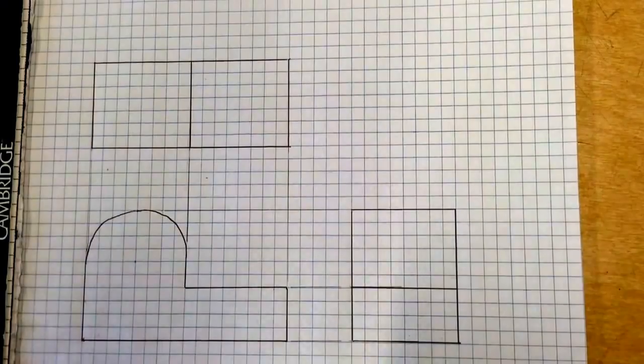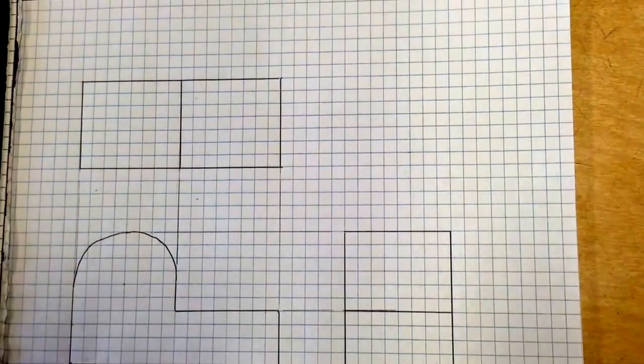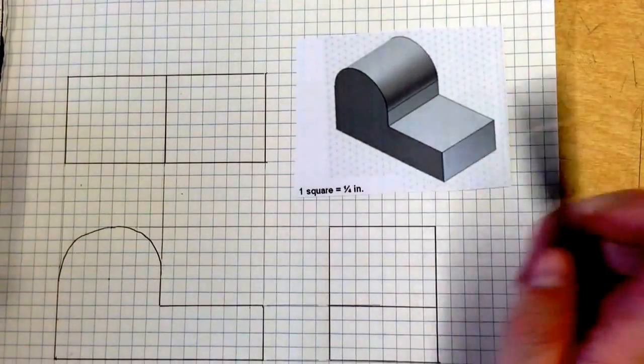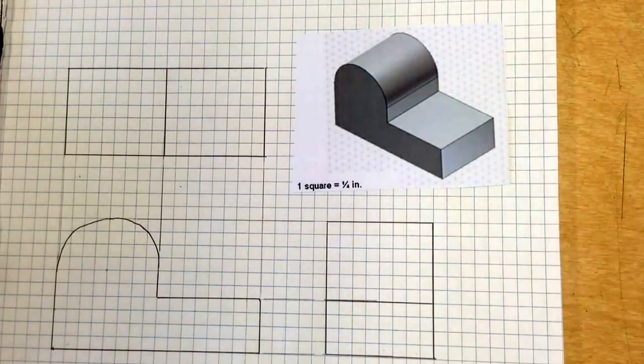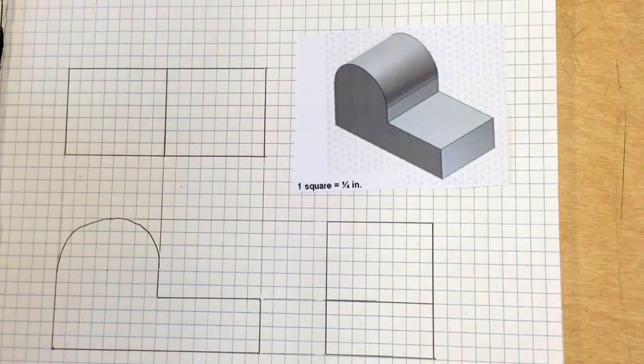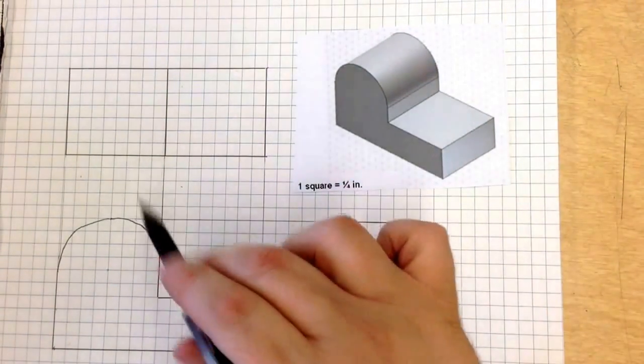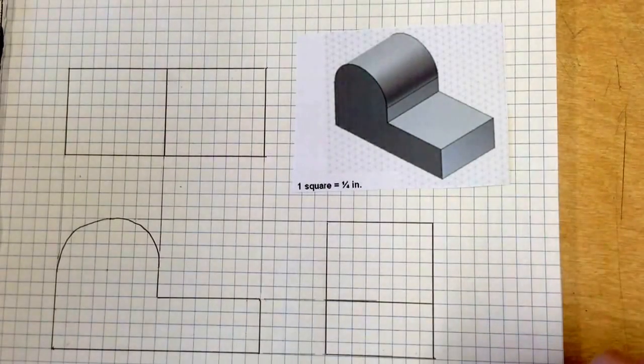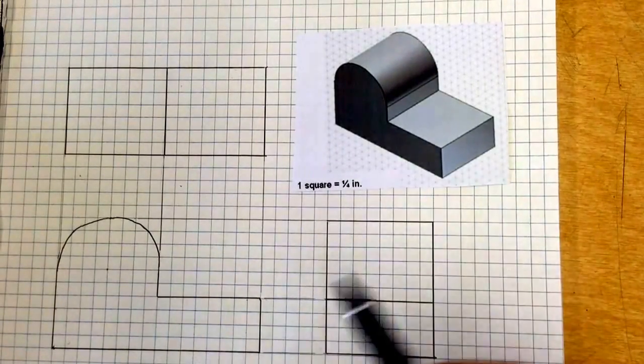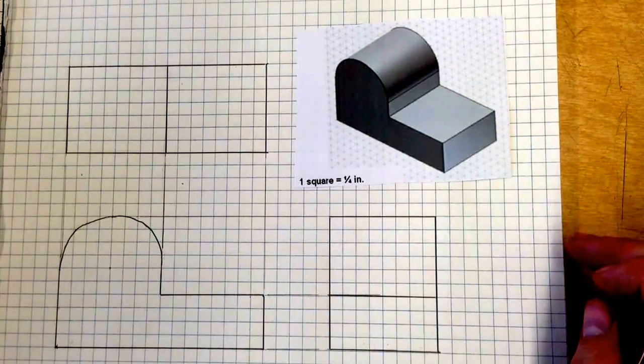So we're going to get started with a drawing with no dimensions right here. Now remember, just as a general rule of thumb, you want to try to keep your dimensions inside the object. Try never to dimension outside. It should be cut down or pretty much completely eliminated if you can.